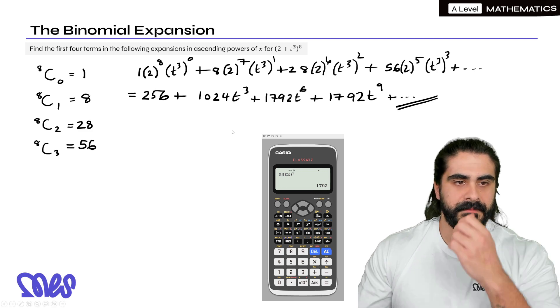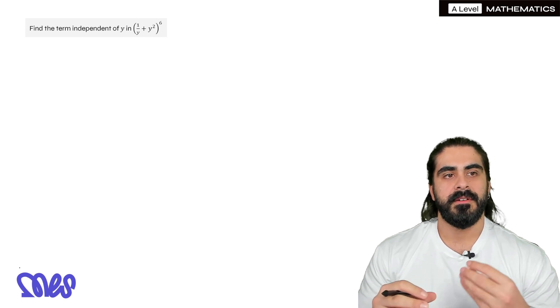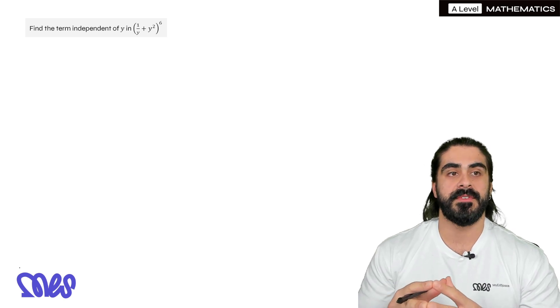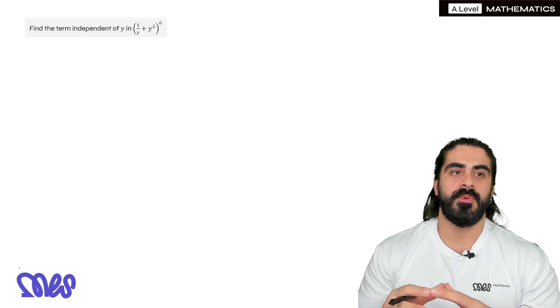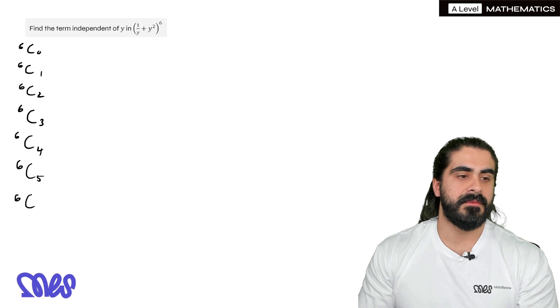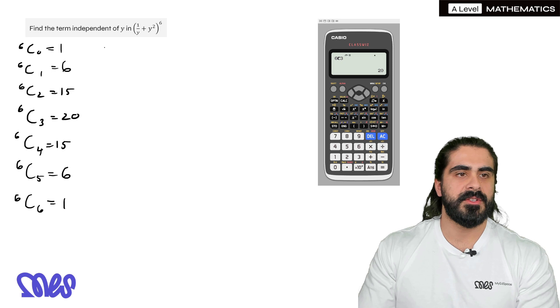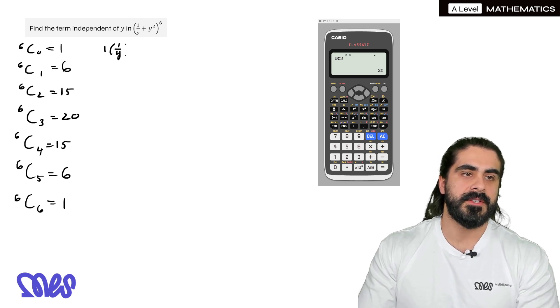Final question, find the term independent of y in this expansion to the power of six. So the first thing we want to do is we want to find the coefficients. So we're going to have another benefit of your knowledge now is that you know there's symmetry. So the first term and the last term are the same. Six choose one would be six, this would be six. So when we write it, we're going to have one, then I'm going to start doing the brackets now. So one over y is going to go down in power. Y squared is going to go up in power.